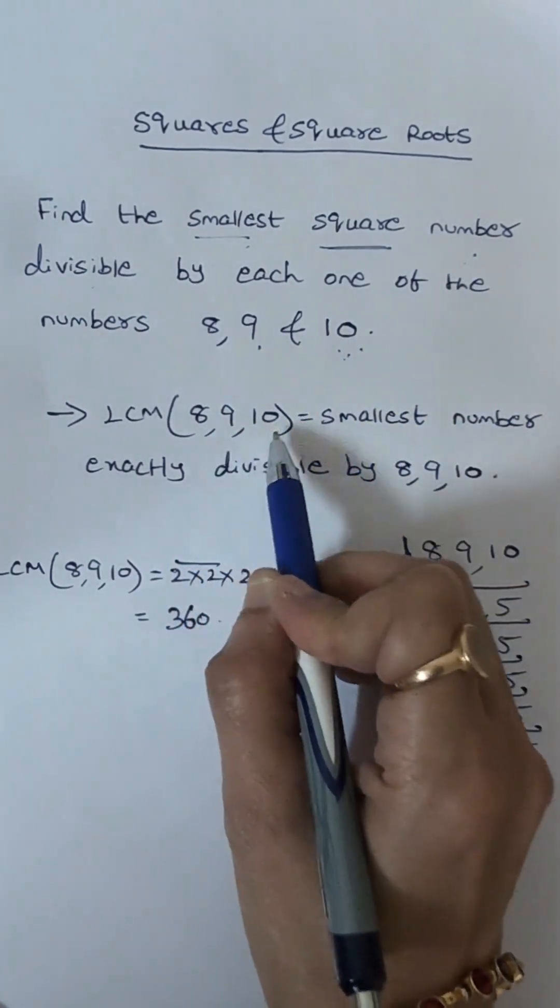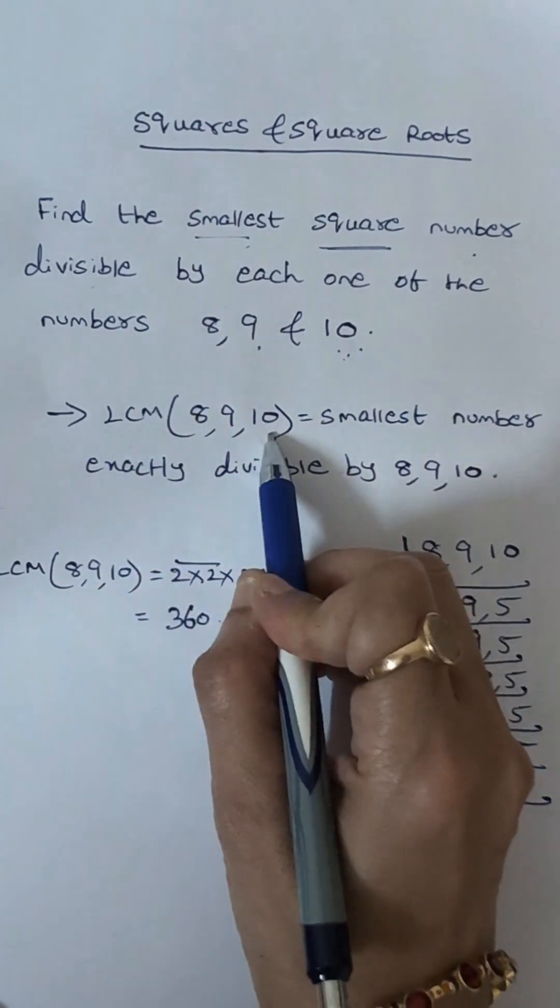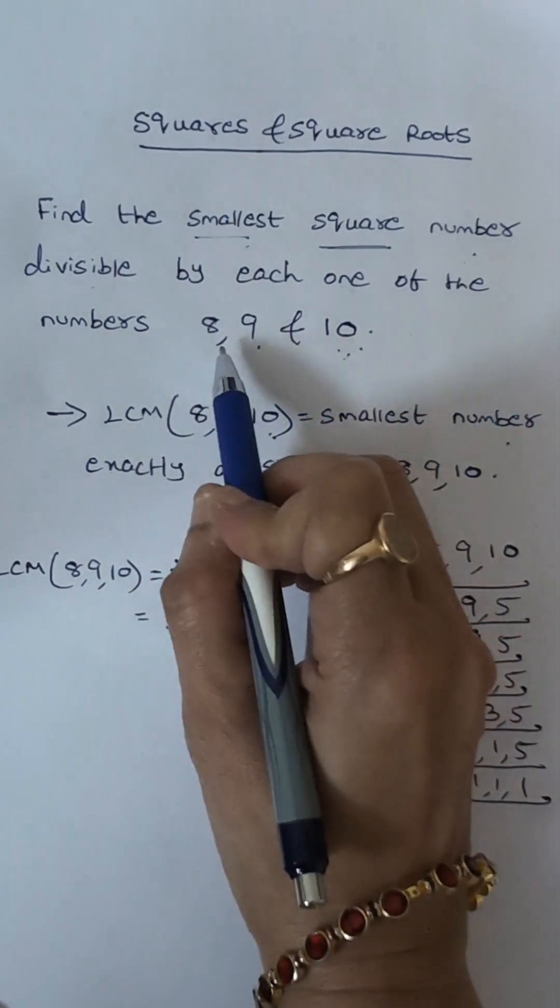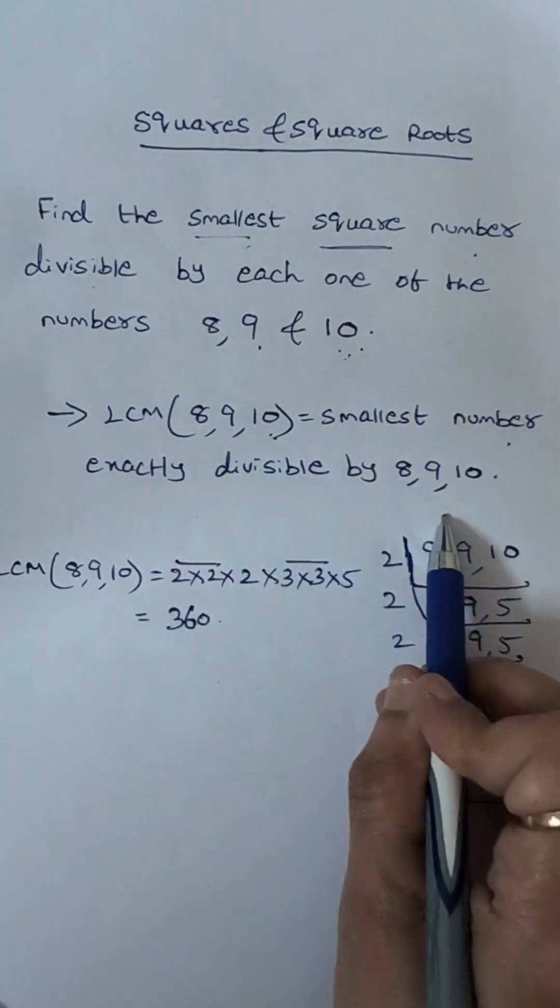Now first of all we will find the LCM of 8, 9, 10. Because when we find the LCM of 8, 9, 10, LCM means that will be the smallest number which will be exactly divisible by 8, 9, 10.